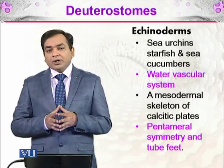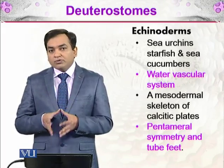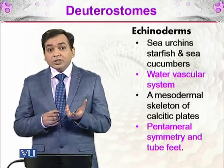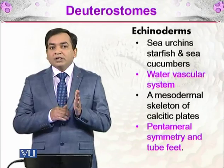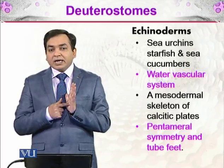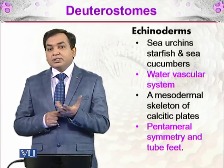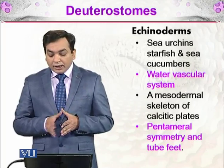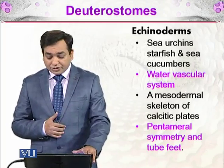Echinoderms also have pentameral symmetry and tube feet. Pentameral symmetry means you can divide the body of these organisms into five identical forms. For example, a starfish has five arms, and each arm multiplied five times joined at a center still forms a whole starfish. The tube feet are responsible for different functions that will be discussed later.